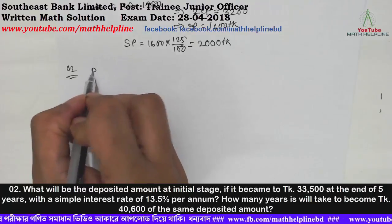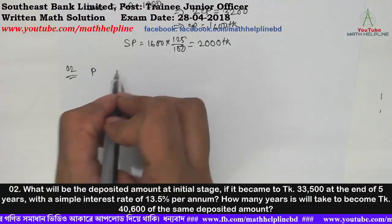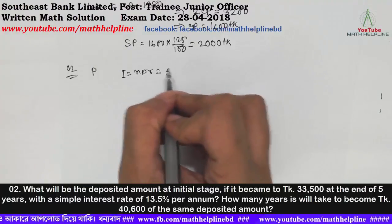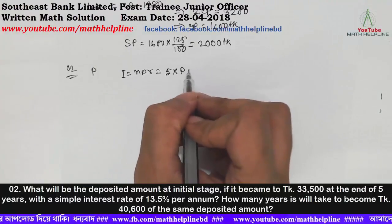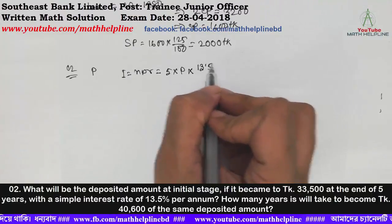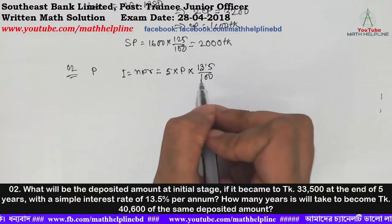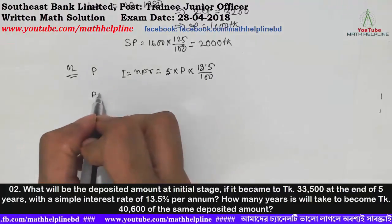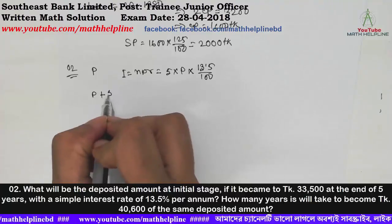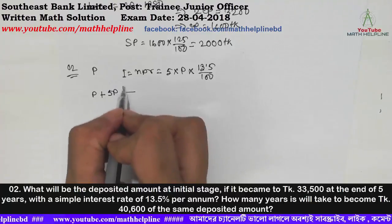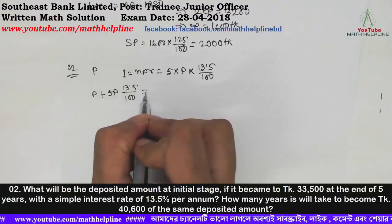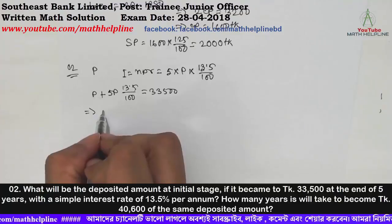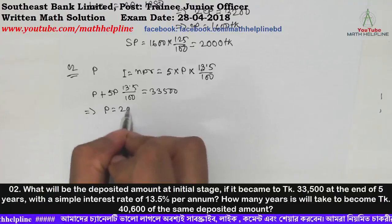So we assume the principal amount is P, and the interest formula is: interest equals P times r times n. Here r is rate of interest = 13.5 by 100. We then set up: principal plus interest — P plus P times 13.5 by 100 equals taka 3,500. After calculation, we get P equals 5,000 taka.